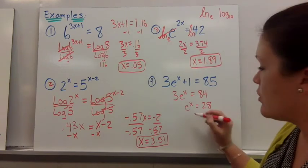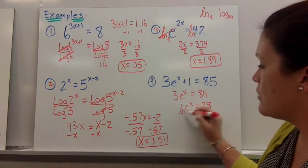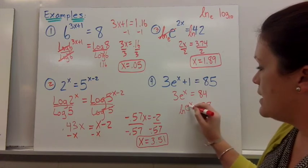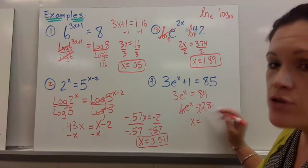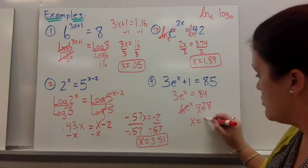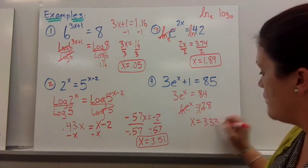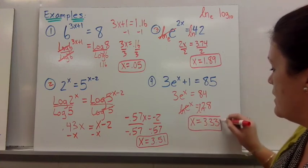Now I can take natural log of both sides because I want to get rid of e. So that gets rid of e. x is equal to and you could type this in your calculator the natural log of 28 which is 3.33 if we round it off. And that's it.